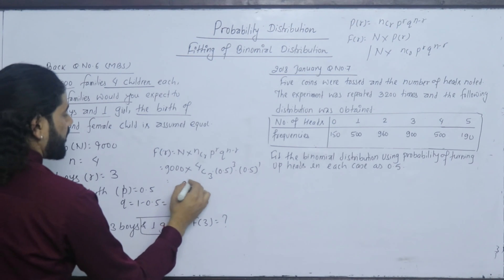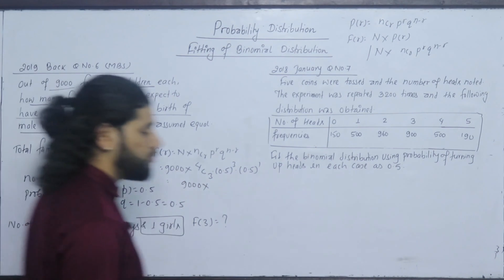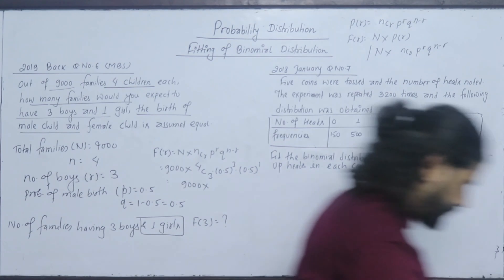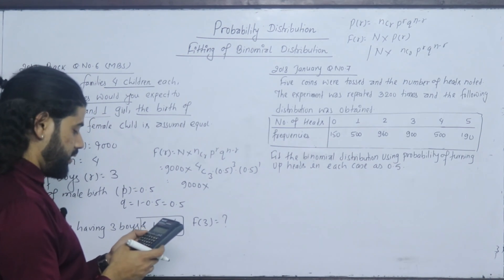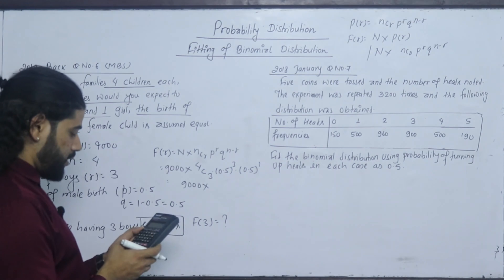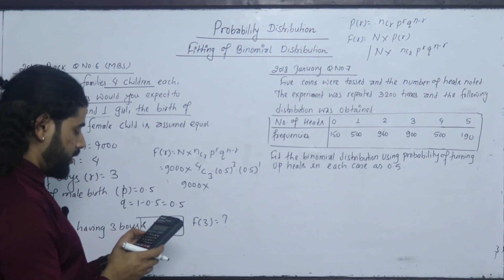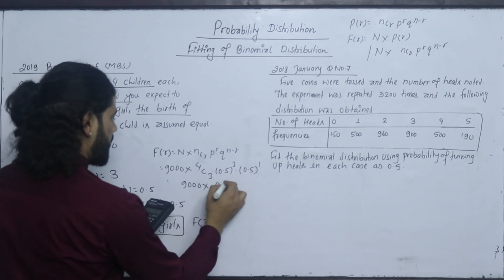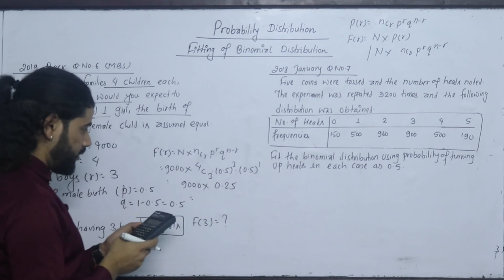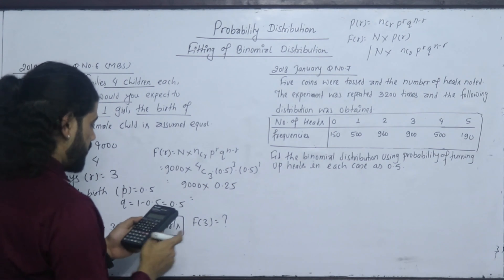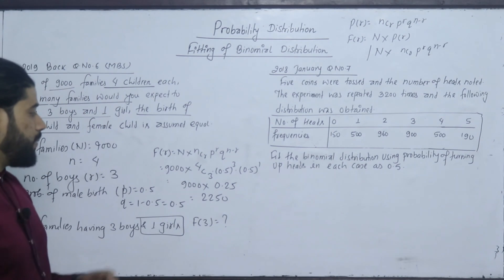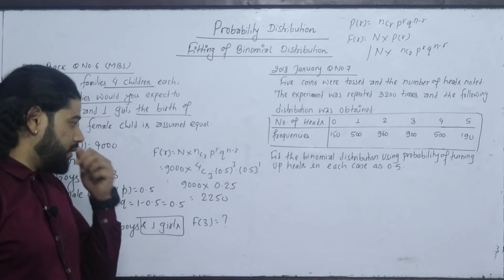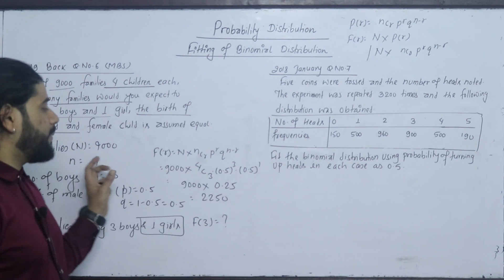We have 9000 into 4C3 into 0.5 to the power 3 into 0.5 to the power 1.